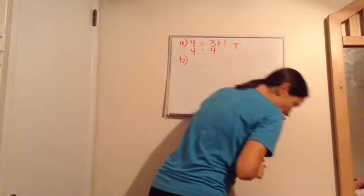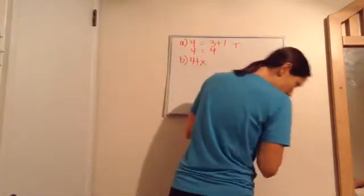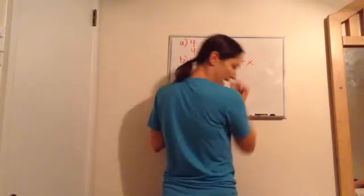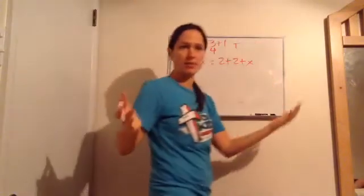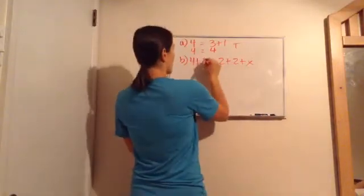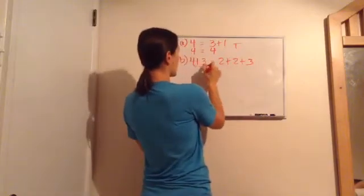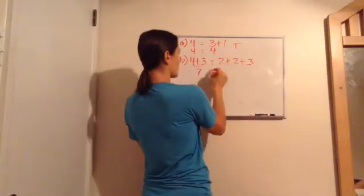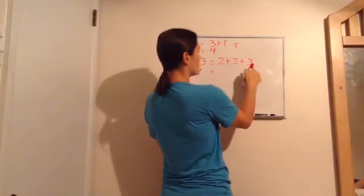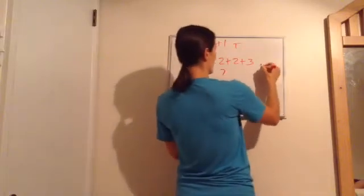B, four plus X equals two plus two plus X. Now, what do you want X to be? Let's just put a number in there. Three. Does four plus three, well, that equals seven. Does that equal two plus two plus three? Yes. Two plus two is four, plus three is seven. Is this one true or false? True.